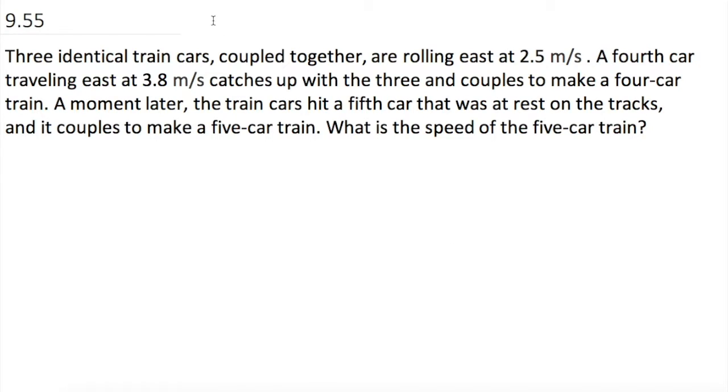Three identical train cars coupled together are rolling east at 2.5 meters per second. A fourth car traveling east at 3.8 meters per second catches up with the three cars and couples together to make a four-car train. A moment later, the train has hit a fifth car that was at rest on the tracks and it couples to make a five-car train. What is the speed of the five-car train?